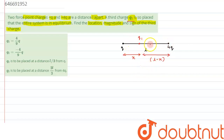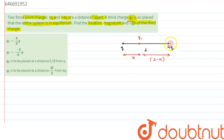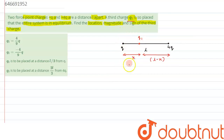One thing to remember: whenever there are two charges of like nature and we are asked such a question, we place the third charge in between the two charges. If they are of opposite nature, the charge will be placed somewhere not in between but alongside. This is a small trick we have to remember.